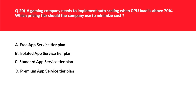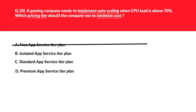Question 20 is related to auto-scaling — we need to choose the correct pricing tier while minimizing cost. Option A, Free App Service tier plan, doesn't support auto-scaling, so we reject it. Option B, Isolated App Service tier plan, includes everything but is the most costly. Option C, Standard App Service tier plan, supports auto-scaling and is more cost-friendly than Isolated — a good candidate. We set Isolated aside.